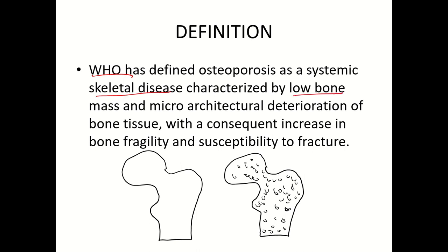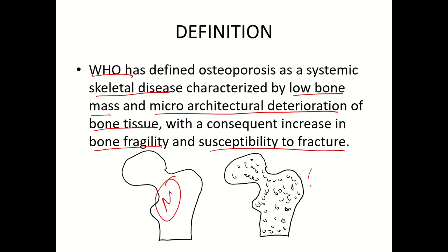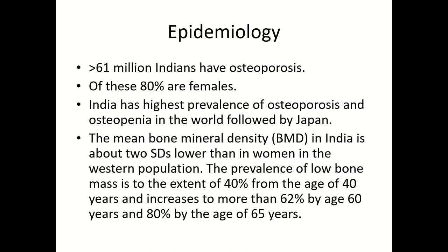Osteoporosis is characterized by low bone mass and deterioration or destruction of the micro-architecture of the bone tissue, which leads to bone fragility — that means weakness of the bone — causing fractures. If the bone is weak, it is highly susceptible to fracture. You can look at the image: a normal bone without holes, and the osteoporotic bone with several holes.